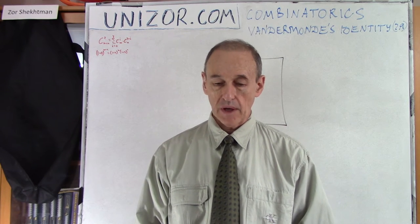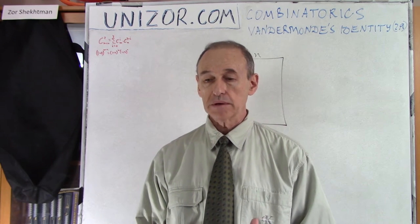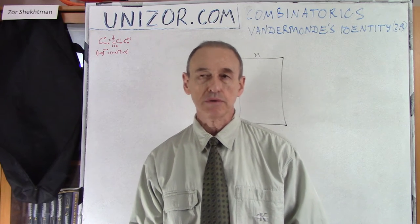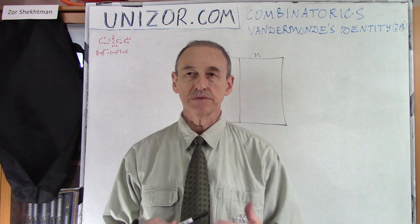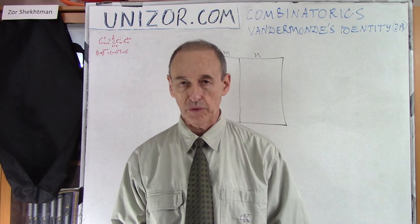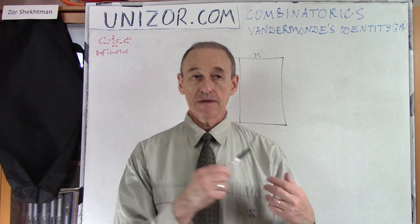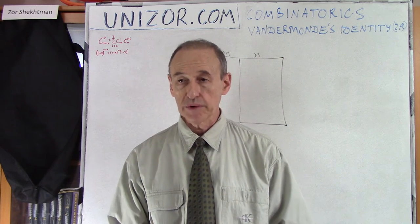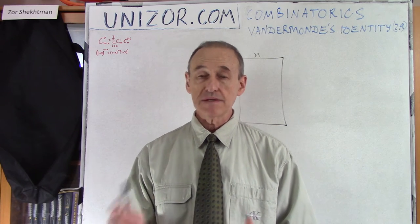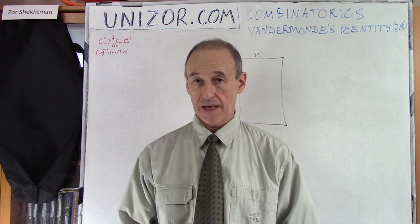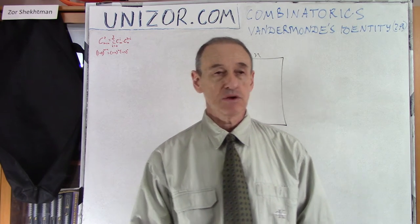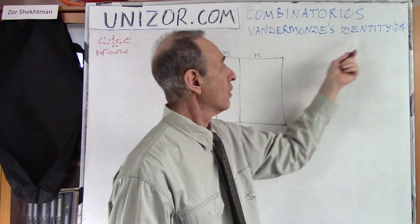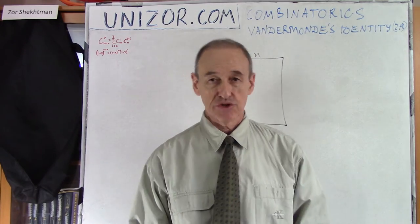Now, speaking about combinatorics, the most important part in combinatorics, I believe, is solving problems. This is actually just yet another problem, but it has a very fancy name. It's called Vandermonde's Identity.